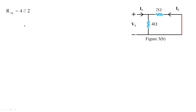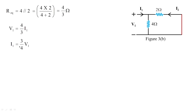For figure 3b, the equivalent resistance seen from the input port is 2 ohms in parallel with 4 ohms, giving R_eq = 4/3 ohms. Therefore v1 = (4/3)·i1, or i1 = (3/4)·v1. Hence y11 = i1/v1 at v2 = 0 equals 3/4 siemens (0.75 S), where capital S (siemens, also called mhos) is the unit of admittance.